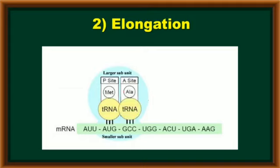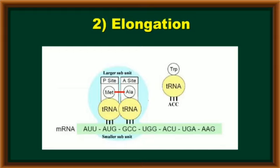Now, A-site and P-site both have a charged tRNA molecule with two amino acids. When the two amino acids are present near to each other, with the help of peptidyl transferase enzyme, peptide bond formation takes place between the two amino acids of P-site and A-site. In the same way, the next codon is read by another suitable tRNA molecule. The next codon is UGG, read by tRNA with A-C-C anticodon, and it transfers tryptophan amino acid.